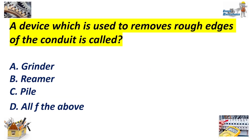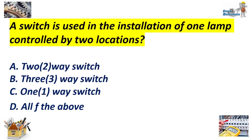A device used to remove rough edges of a conduit is called: A. Grinder. B. Reamer. C. File. Answer: B. Reamer. A switch used in installation of one lamp controlled by two locations: A. Two-way switch. B. Three-way switch. C. One-way switch. D. All of the above. Answer: B. Three-way switch.